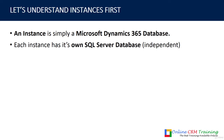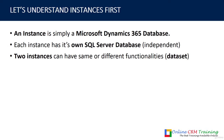Each instance has its own SQL Server database which is independent. For example, if you have two instances in Dynamics 365, both will have their own SQL Server databases with their own data and objects. The customizations in each instance can be different — for one instance you may have customized the account entity, and in another you may not have. Two or more instances are independent of each other.